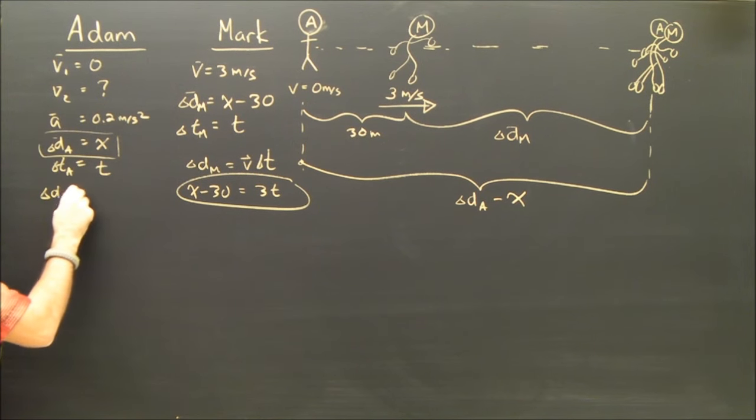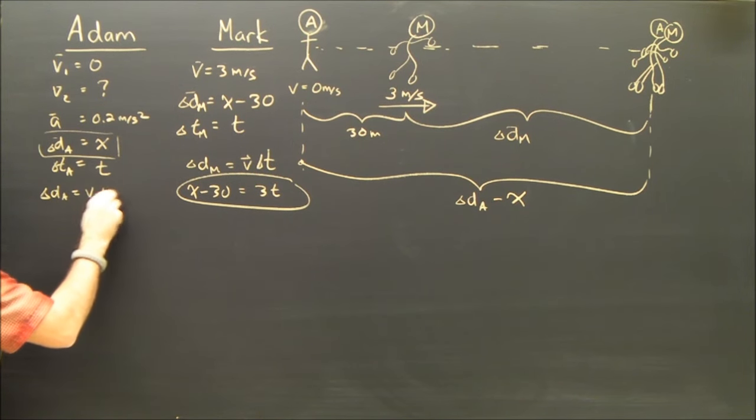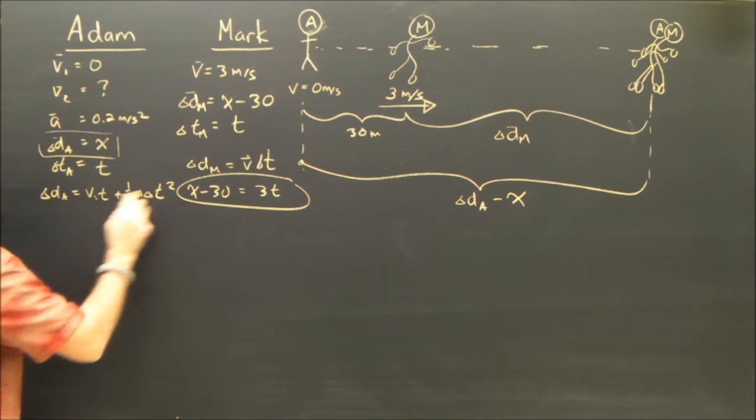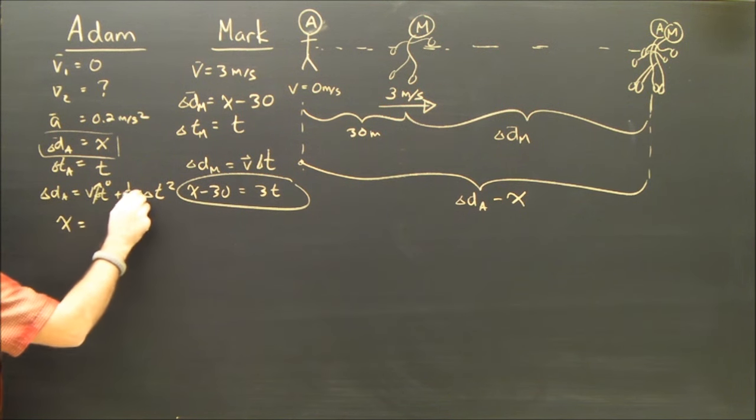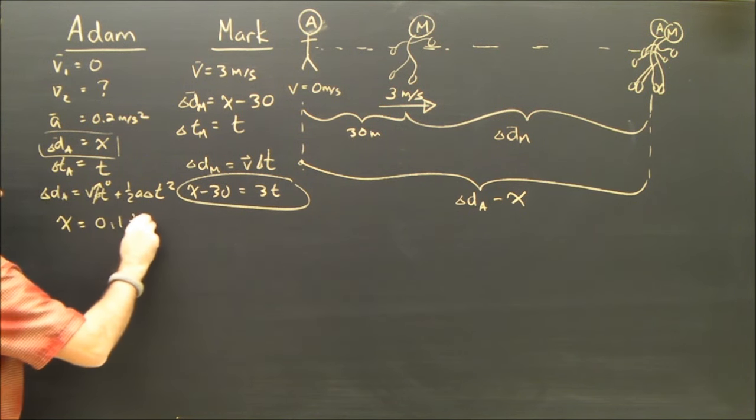Looking at Adam, we see that d equals V1t plus a half at squared. Subbing in, again, V1 is zero, disappears, that's convenient. We see that x equals 0.1t squared.